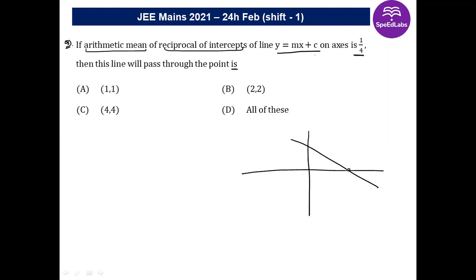For the x-intercept, we set y = 0, giving us (−c/m, 0). For the y-intercept, we set x = 0, giving us (0, c). So now we have both intercepts of the line.